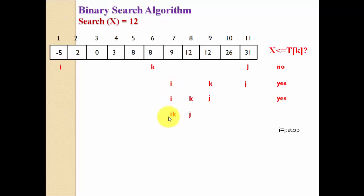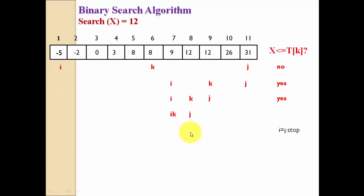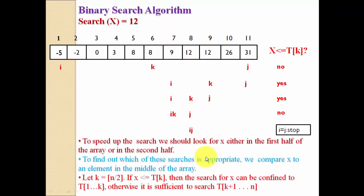We compare the middle element at index 7 — which is 9 — with our searching element 12. Since 12 > 9, the element is in the right part. When in the right part, i becomes k + 1 = 7 + 1 = 8, and j stays as 8. Now i = 8 and j = 8 — both are equal, so we stop. We return i = 8, which indicates that element 12 is available at position number 8. This is all about binary search.